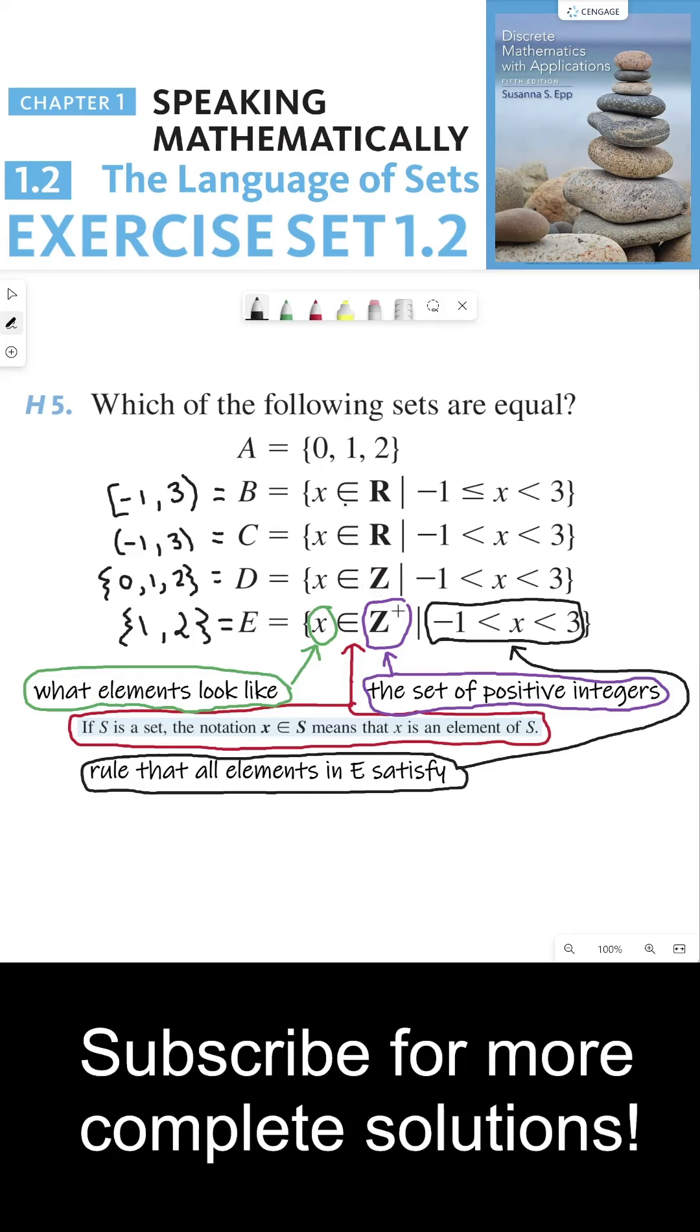So which sets are equal? It would be A and D. Those two sets are equal. Thanks everyone and I'll see you in the next video.